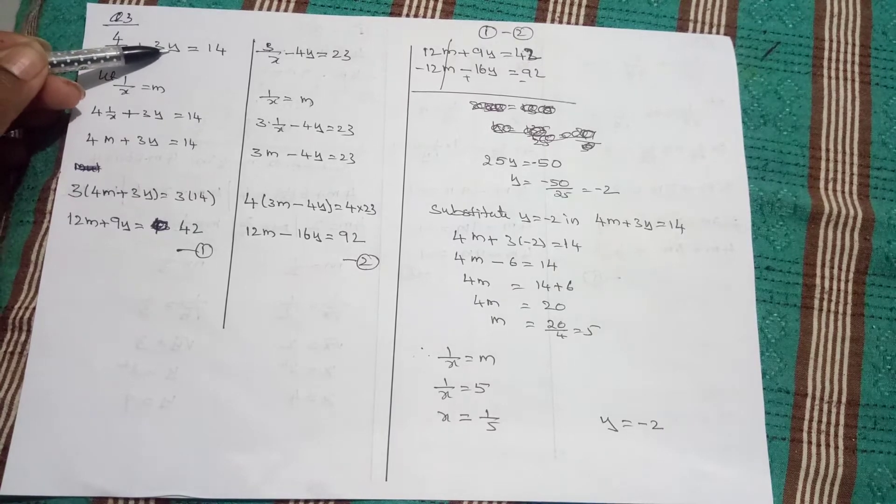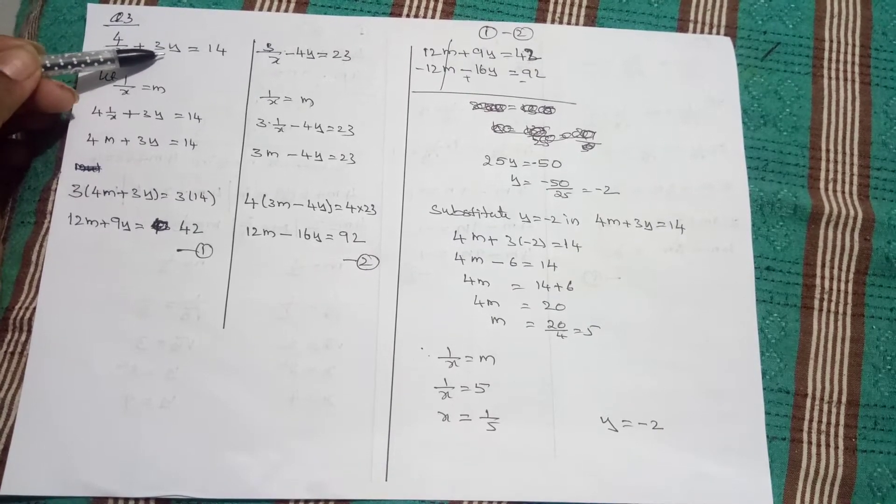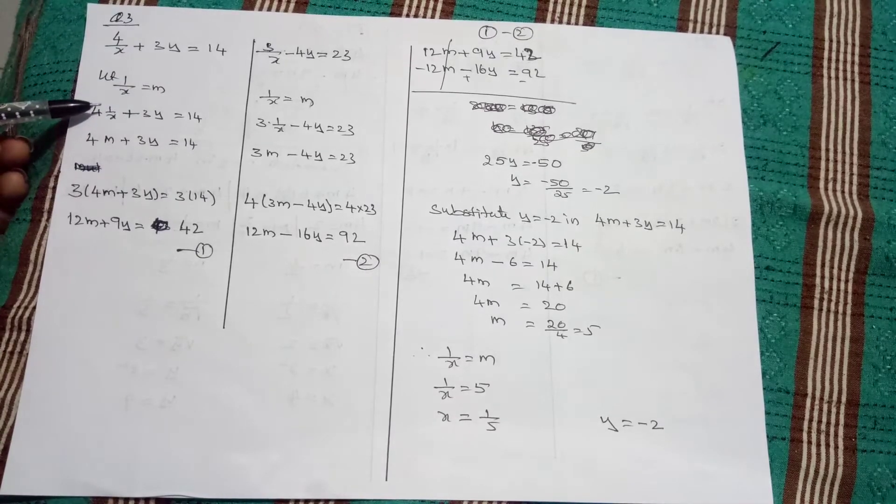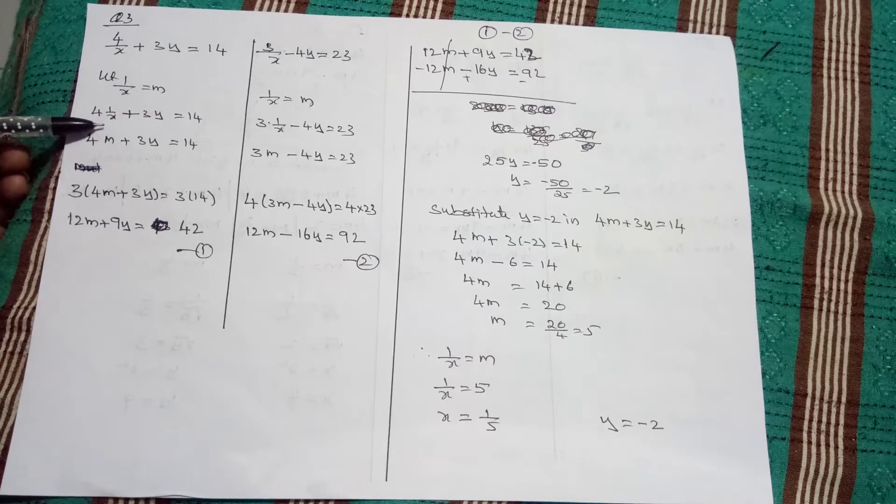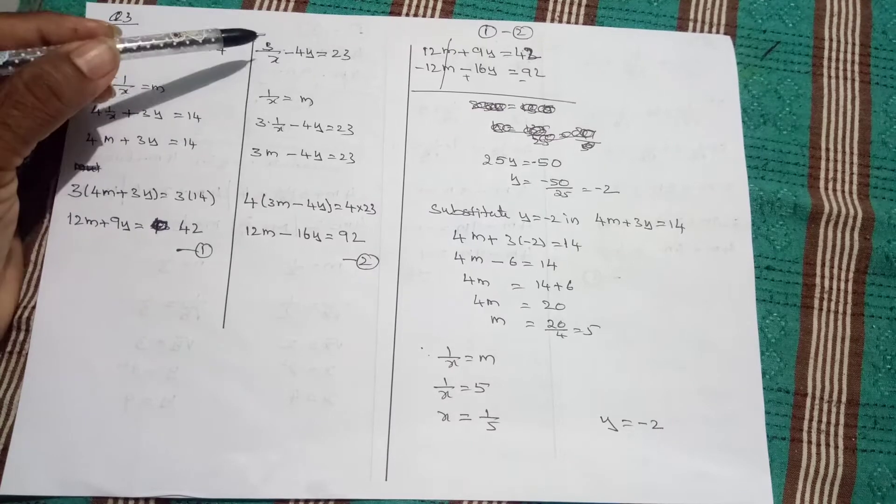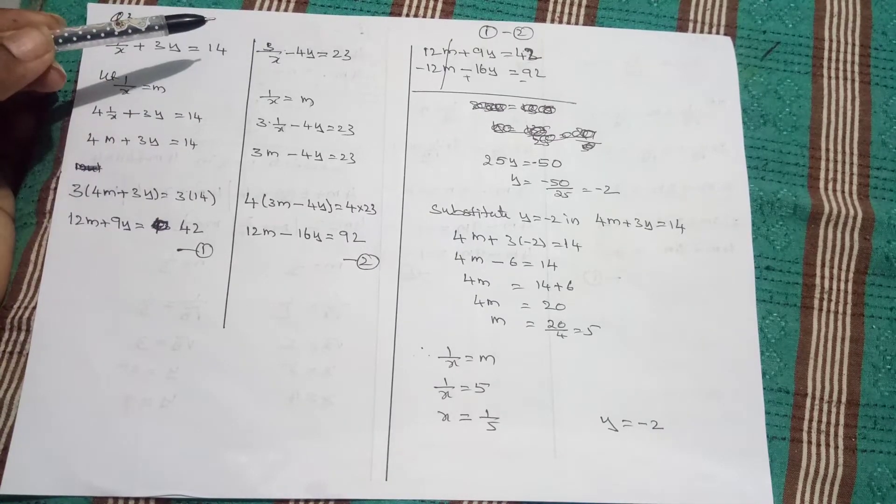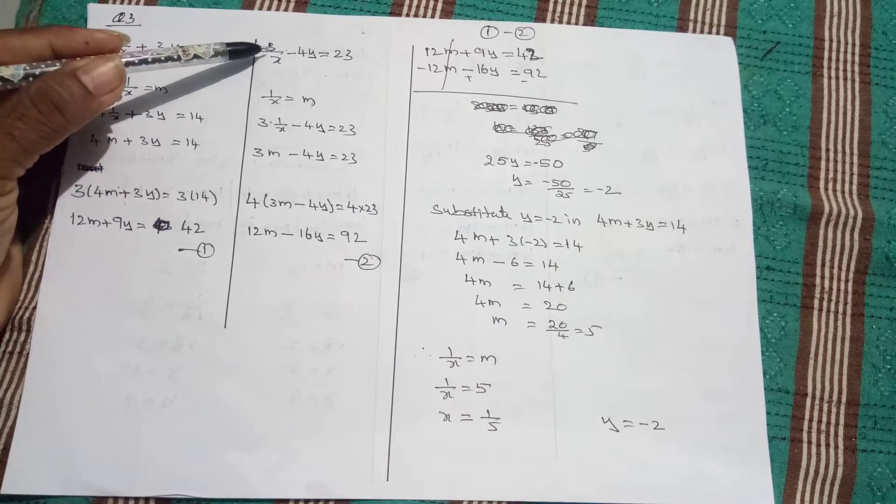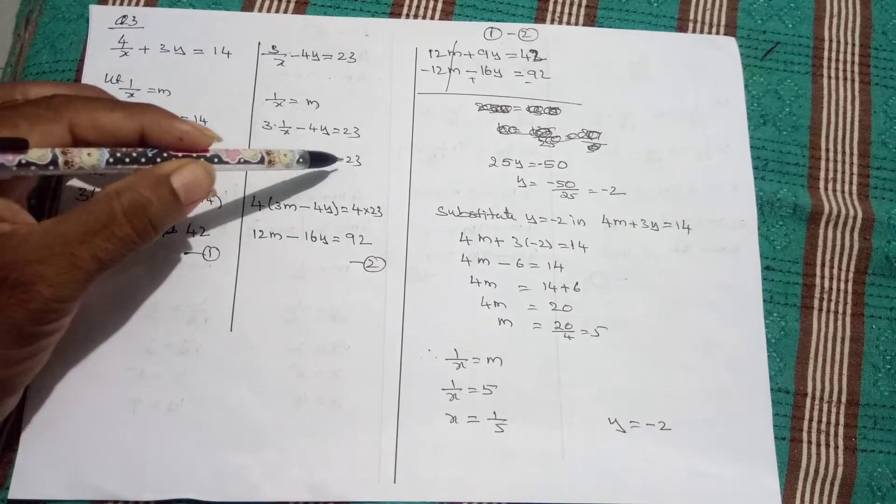I need not change y because it is already in the numerator. So, 4 times 1 by x, 1 by x can be called m, plus 3y equals 14. 3 times 1 by x, that means m, 3m minus 4y equals 23.